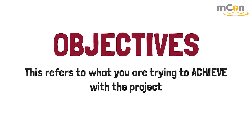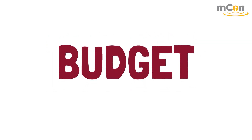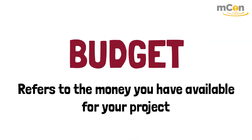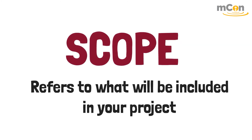Objectives refers to what you are trying to achieve with your project, and budget refers to the money you have available for your project. Scope refers to what the project will do or what will be included in the project. As the project continues, the person leading the project may discover that there are changes or adjustments that need to be done in one of these areas.